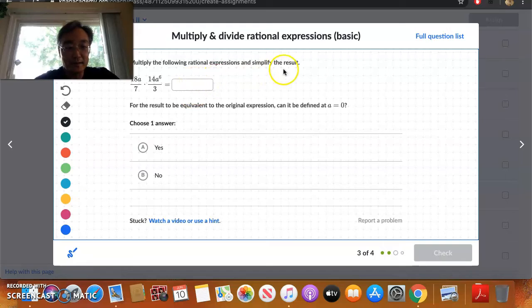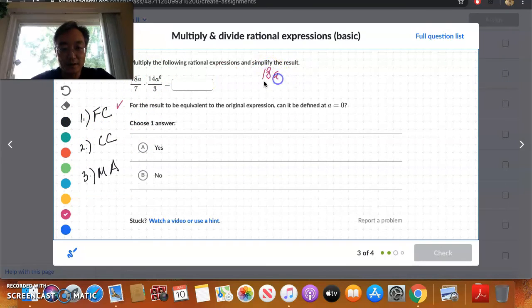Okay. Let's multiply again. So multiplying here. No keep change flip because it's already a multiplication. Factor completely. Cross cancel. And multiply across. Correct? So factor completely. Again, everything is factored because they're all monomials. Nothing to do. Cross cancel.